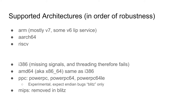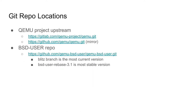MIPS and SPARC64 have been removed from the blitz branch because FreeBSD removed those as well. QEMU generally targets supported FreeBSD releases. One big exception: BSD user still supports FreeBSD 11 system calls because Rust doesn't have a libc layer and goes directly to system calls, and Rust doesn't use the inode64 system calls yet — so we still have to support those if we have any hope of making Rust work.